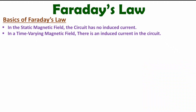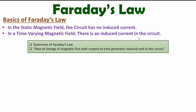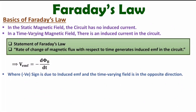The basic statement of Faraday's Law is: for a time-varying field, the rate of change of magnetic flux with respect to time generates induced EMF in the circuit. There is a negative sign because the induced EMF and the time-varying field are in opposite directions.